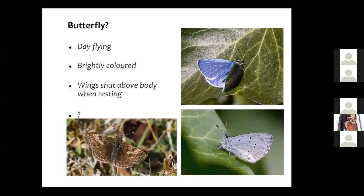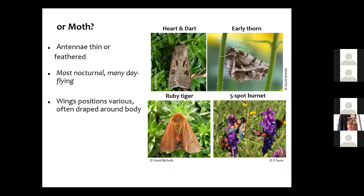Butterflies are generally day-flying, but they do turn up in moth traps at night. Most of them are brightly coloured — you can see at the bottom a dingy skipper butterfly that is very moth-like, not brightly coloured. They usually shut their wings above their bodies when resting, but not all of them. Moths show a whole range of things: some are brown and drab, some are fabulous shapes like the thorn moths, and others at the bottom are really brightly coloured. Most are nocturnal, but there are many day-flying moths, and they hold their wings in different positions.